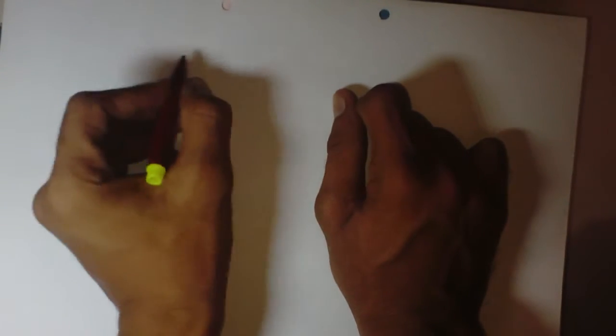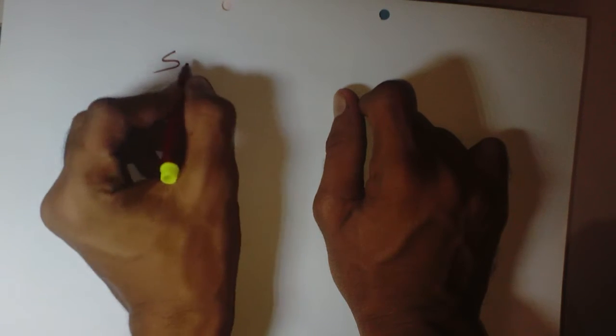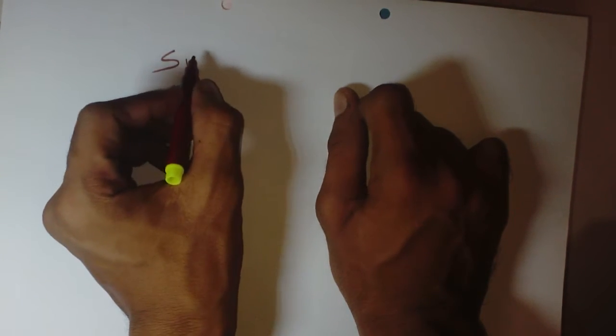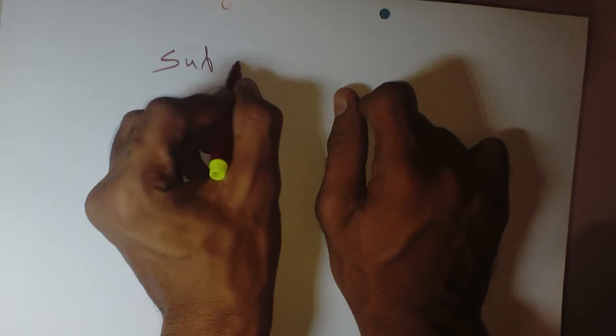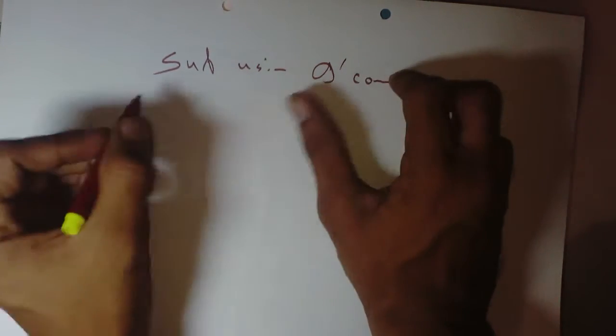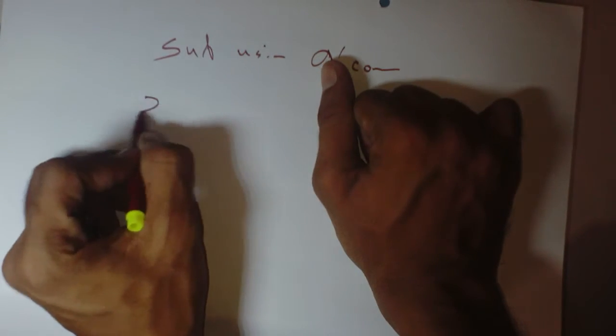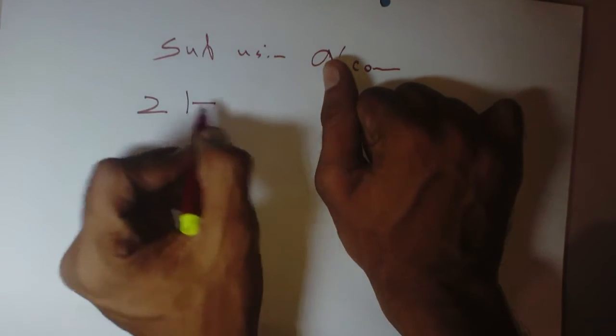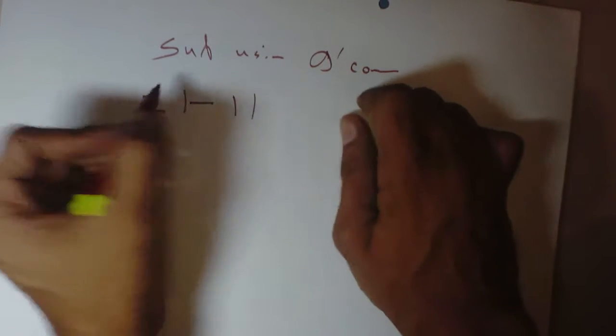Hello people, welcome to this tutorial. In this tutorial we will see how to perform subtraction using 9's complement of decimal numbers. Suppose we want to subtract 21 minus 11, so we know...